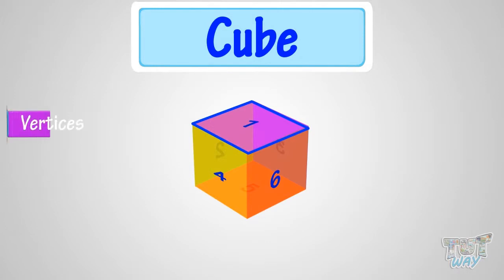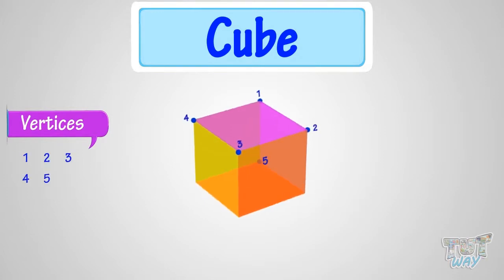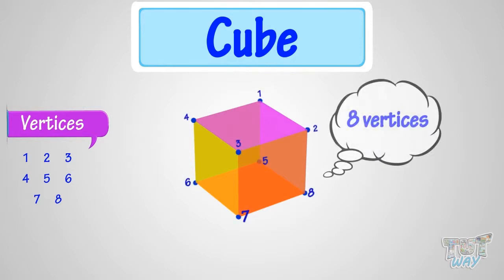Let's count its vertices. One, two, three, four, five, six, seven, eight. So, a cube has eight vertices.